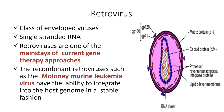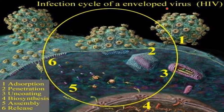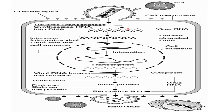The infection cycle of an enveloped virus consists of absorption, penetration, uncoating, biosynthesis, assembly, and release. One of the best examples of a retrovirus is HIV. Now let's look at the replication of retrovirus.